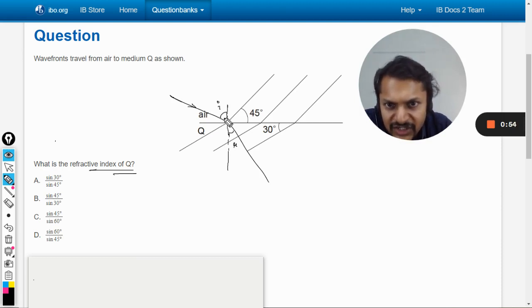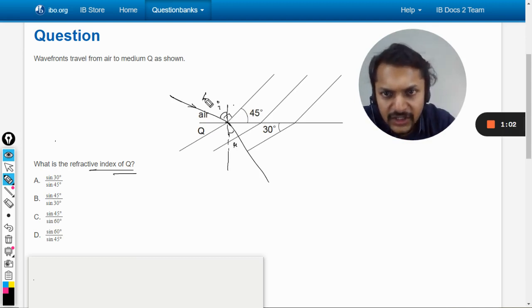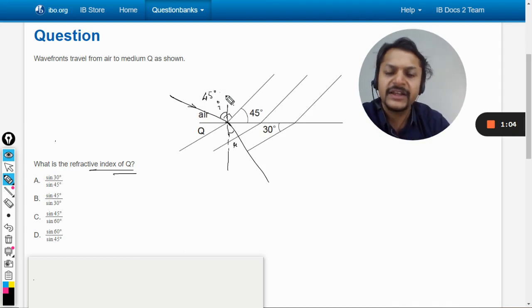So this is 90 degrees to the wavefront. So if this is 45, this will be 45, and this is 90 degrees. So this incident angle will be taken as 45 degrees.